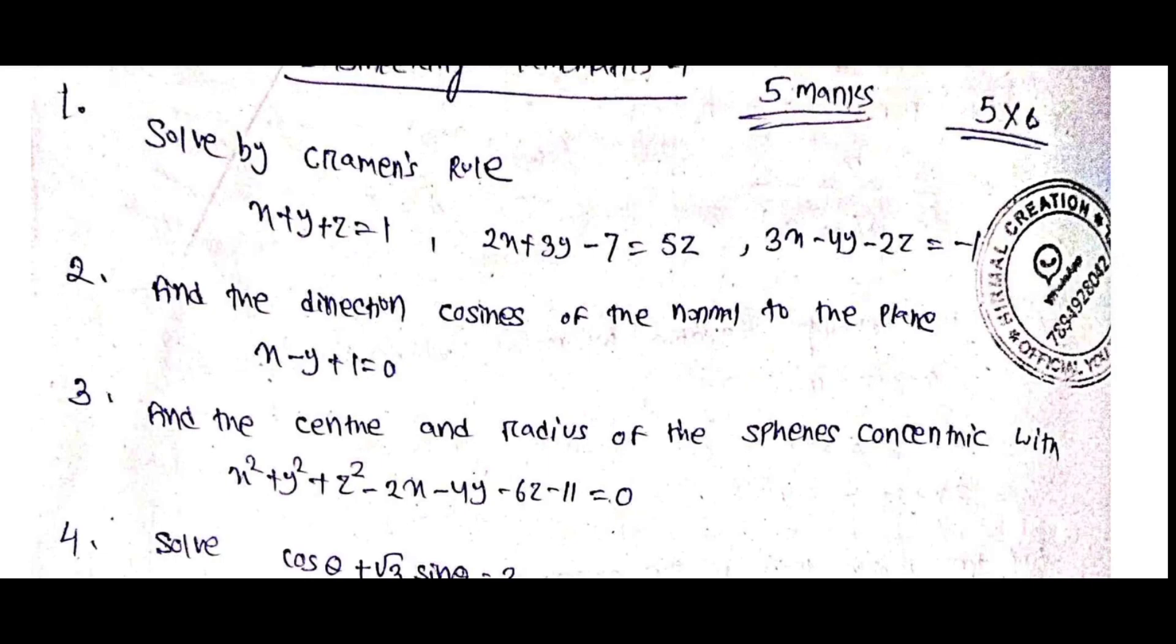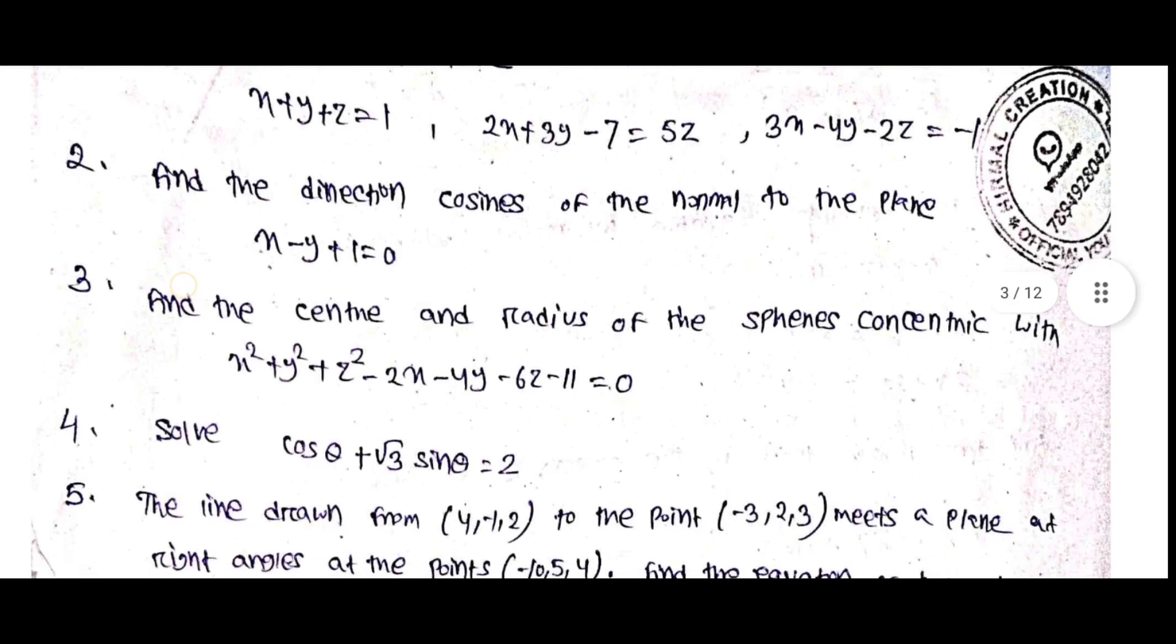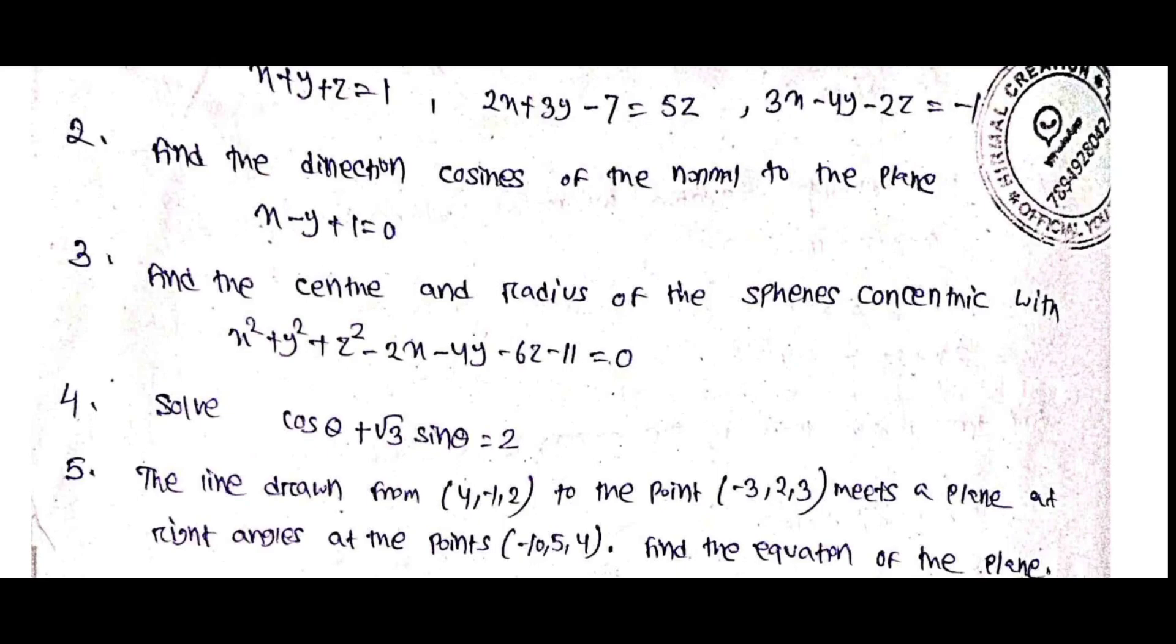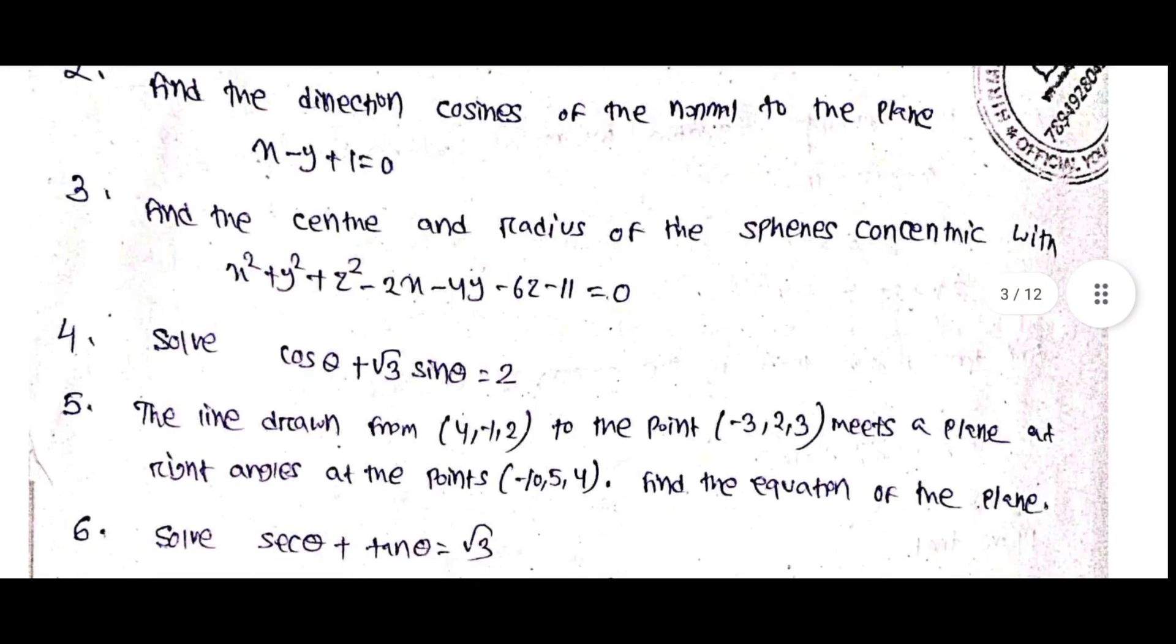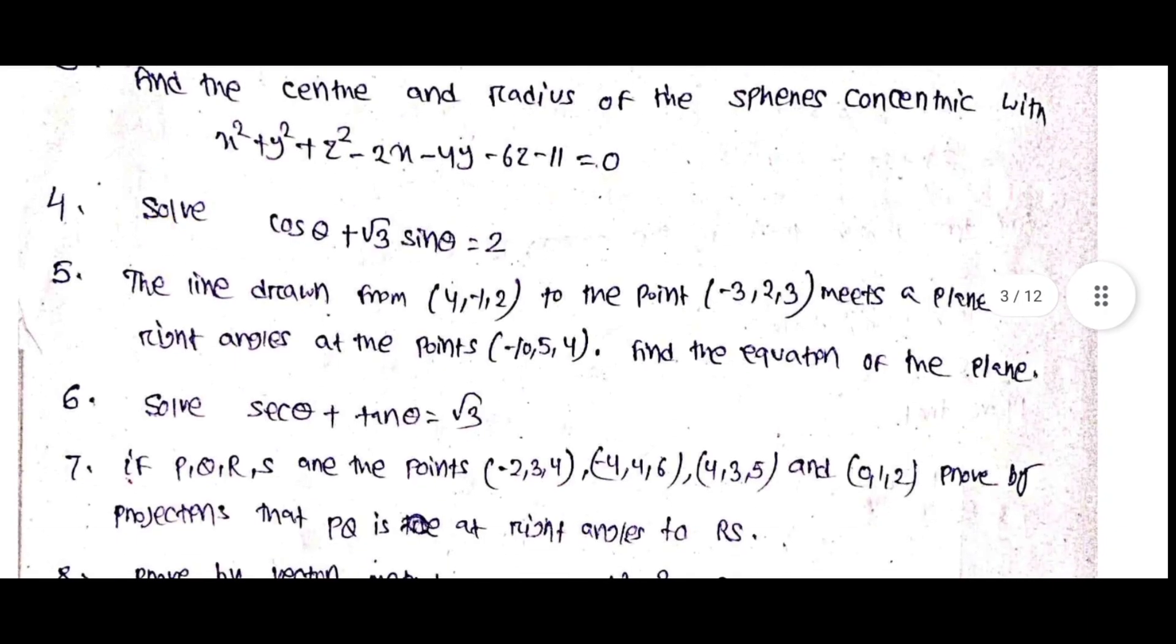Solve by Cramer's rule: x plus y plus z equal to 1, 2x plus 3y minus 7 equal to 5z, 3x minus 4y minus 2z equal to minus 1. Find the direction cosines of the normal to the plane x minus y plus 1 equal to 0. Find the center and radius of the sphere concentric with x square plus y square plus z square minus 2x minus 4y minus 6z minus 11 equal to 0.